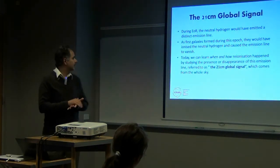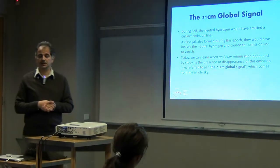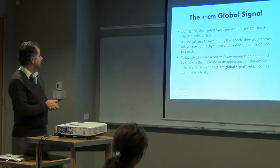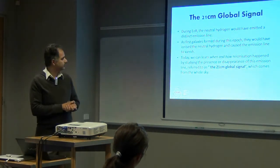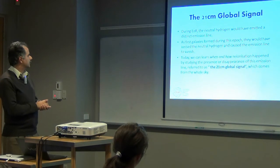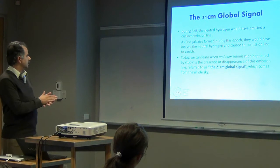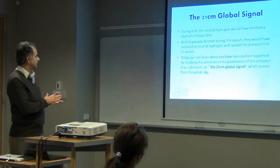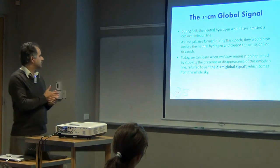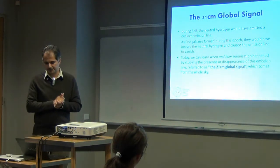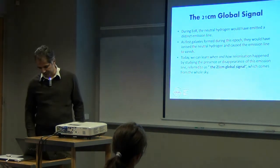During EOR we know that neutral hydrogen would emit emission lines which are very distinct. And when the galaxies started to form they would ionize the neutral hydrogen and cause the emission lines to vanish. And then today we can learn how and when the ionization happened by studying the presence and disappearance of this emission line. We refer to this as the global signal.